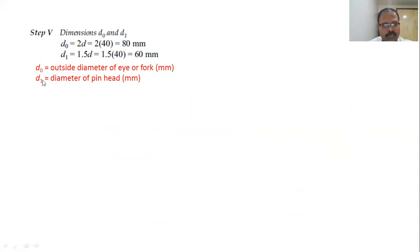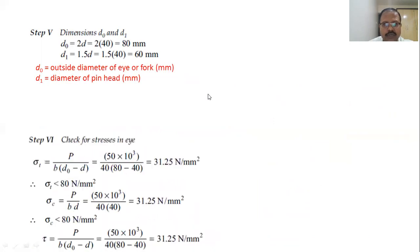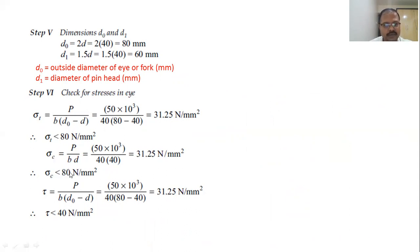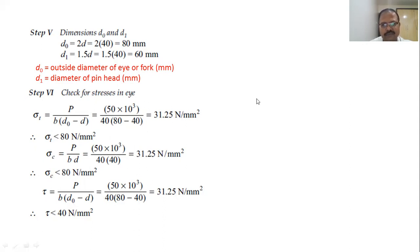DO and D1 dimensions are calculated using empirical relations: DO equals 2 times d equals 80 mm (outside diameter of eye or fork), and D1 equals 1.5 times d equals 60 mm (diameter of knuckle pin head). Using all these dimensions, we now calculate induced stresses in the eye. Sigma T for the eye comes out to be 31.25 N/mm², which is less than the permissible 80 N/mm². The crushing stress also equals 31.25 N/mm², which is less than 80 N/mm². All three stresses — tensile, crushing, and shear — are within permissible limits, so the eye is safe.